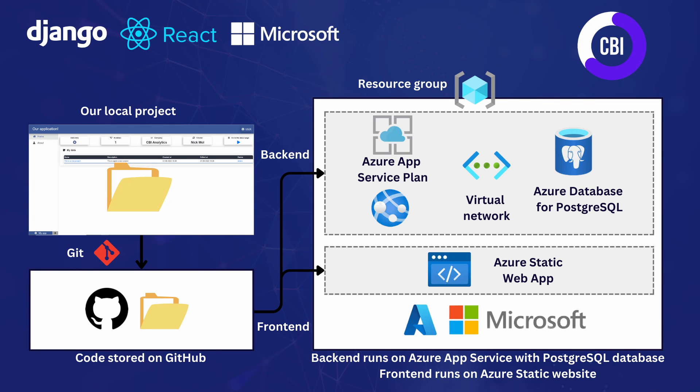Now let's take a brief look at the architecture for this deployment. Our local project is currently inside a folder on my personal computer and I'm using Visual Studio Code to edit it. Once we've made a few changes to that code, we're going to push our local code to a GitHub repository using Git. That GitHub repository is kind of like an online place where we can store the code, and it's going to be the connection point to Microsoft Azure. The first thing we will do on the Microsoft Azure portal is creating a resource group, which will function as a container for all of our different services.